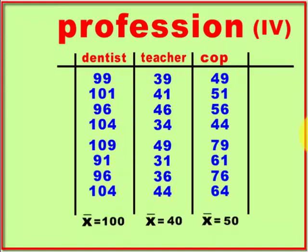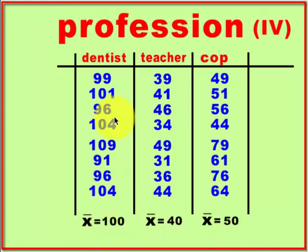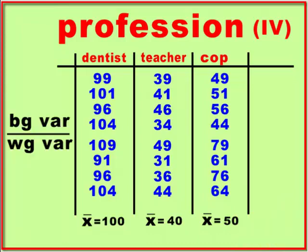The ANOVA is going to compare the means of these groups to see if there's a significant difference — you can just gauge it, dentist is much higher than the other two. If you're going to do this by hand, you're going to calculate the between-group variance — that's the good variance you can explain.